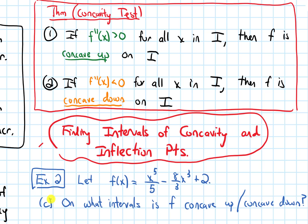We're now ready for part C of this example, which asks: on what intervals is f concave up, and on what intervals is it concave down? The key idea is that when our second derivative is positive, our function is concave up. And when the second derivative is negative, our function is concave down.